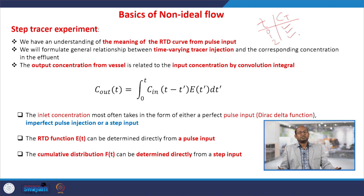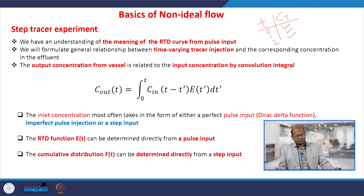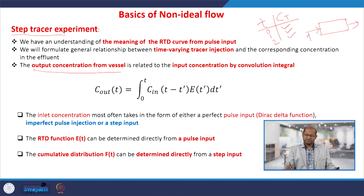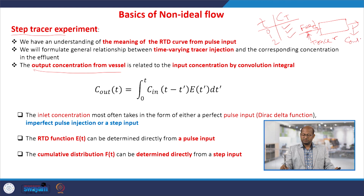These are the concentrations from the pulse experiment or pulse input experiment we can get, and from there C(t) curves or C curves or E curves we can get. If we want to conduct the step tracer experiments, then we look at the output concentrations of the vessels or reactors. Here the injection should be continuous tracer input in the feed line, and from here continuously we will get the concentration C_out — the tracer concentration coming out — which we will measure.